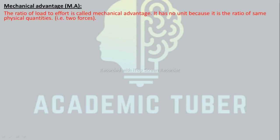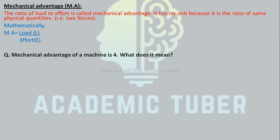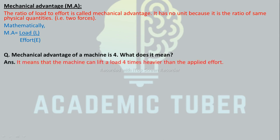Mechanical Advantage (MA): the ratio of load to effort is called mechanical advantage. It has no unit because it is the ratio of the same physical quantities, that is forces. Mathematically, MA equals load divided by effort. If the mechanical advantage of a machine is 4, it means that the machine can lift a load four times heavier than the applied effort.